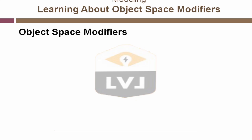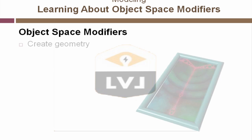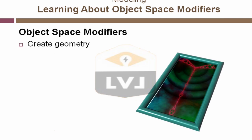Sometimes object space modifiers can create new geometry. For example, if you're creating a picture that's going to be hanging on a wall in your scene and you need a frame, you can use a sweep modifier applied to a 2D rectangle to create the 3D geometry of the picture frame.